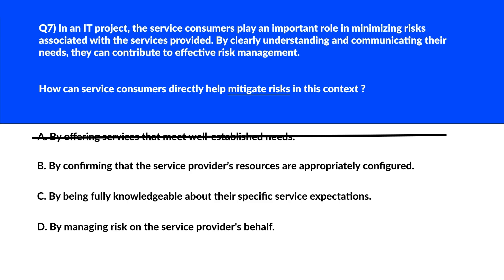Option C says 'by being fully knowledgeable about their specific service expectations.' The key to risk mitigation is clear communication of service consumers' needs and expectations — we'll park this. Option D — 'by managing risk on the service provider's behalf' — would be an overextension of the consumer's role. We'll reject this and lock option C as the right answer.